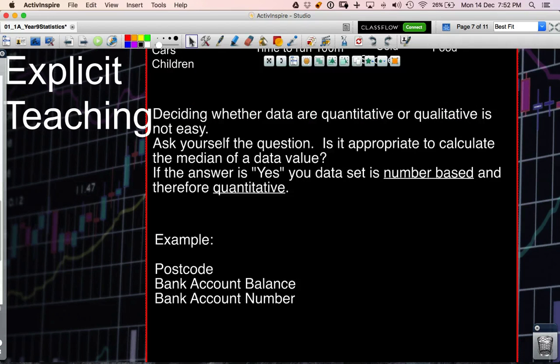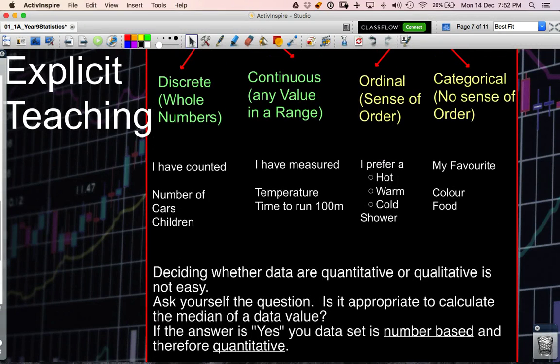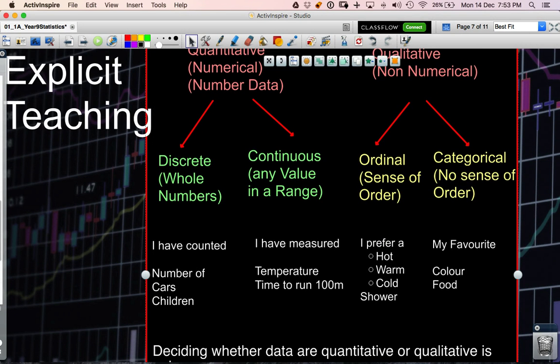Just a couple of examples here. If I was looking at postcode I would ask myself the question: is it appropriate to calculate the median of this particular value? Does it make sense to have the median of a postcode? Well the answer is no. So we would say that postcodes would be qualitative and in effect that would be categorical.